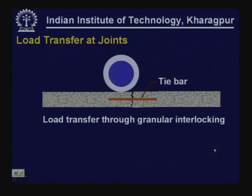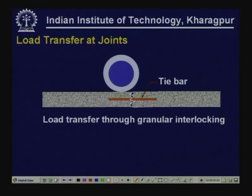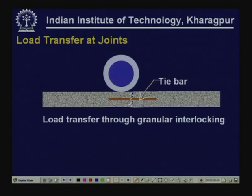We can also expect load transfer through granular interlocking if we just provide only tie bars. This is a situation where we have a crack developing through the slab and we have provided tie bars to ensure that the slabs do not get separated. Another mechanism: you can also have granular interlocking combined with dowel bars, so both granular interlocking and dowel bars together provide this load transfer mechanism.